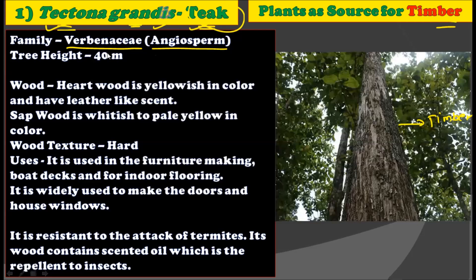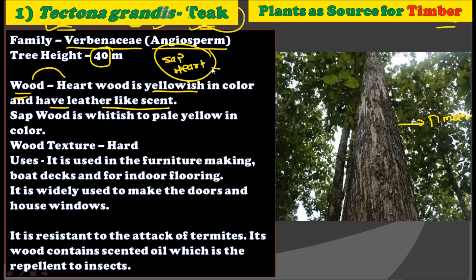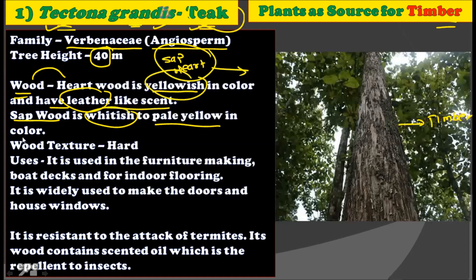This tree can grow up to a height of 40 meters. The wood of this tree shows hardwood which is yellowish in color and has a leather-like scent. The wood contains both sapwood and hardwood. The hardwood of Tectona grandis is yellowish in color and has a leather-like scent, while the sapwood is whitish to pale yellow in color.